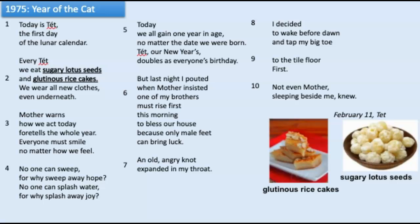So now that we know what we have to do, let's look at the two poems we need to use to answer this prompt. Remember, we are paying close attention to how Ha's point of view — what we learn about her thoughts, feelings, and actions — helps us see how she has changed. The poem 1975 Year of the Cat is the very first poem of the book. Pay close attention to her point of view — what she says about her thoughts, feelings, and actions — so we can later see how she's changed once we read the last poem of the book.